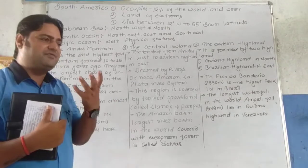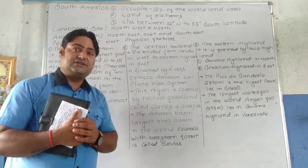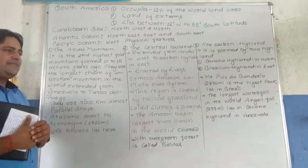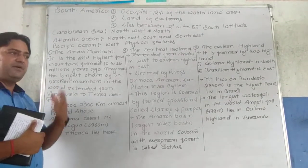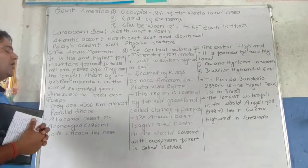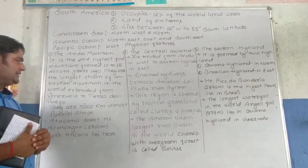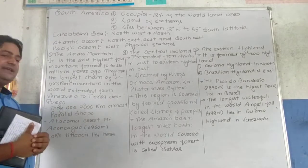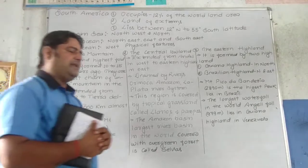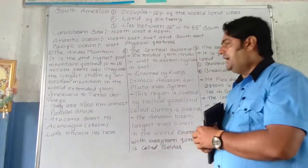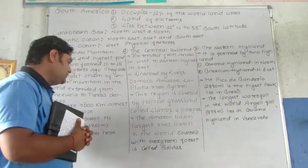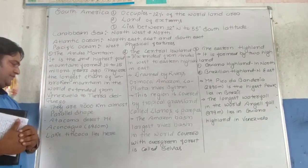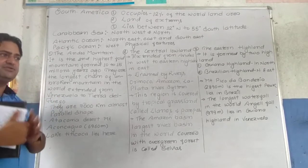Now let's discuss the Andes Mountains. The Andes is the second highest fold mountain in the world, formed about 10 to 15 million years ago. It is the longest chain of unbroken mountains in the world. It is extended from Venezuela to Tierra del Fuego — a stretch of approximately 7,000 kilometers in a parallel shape.